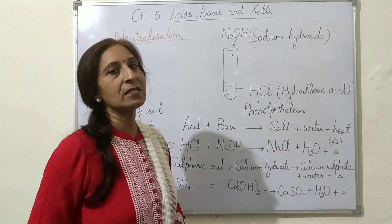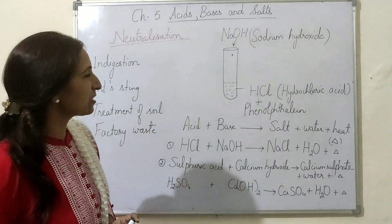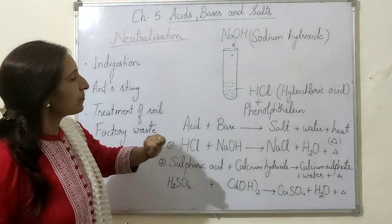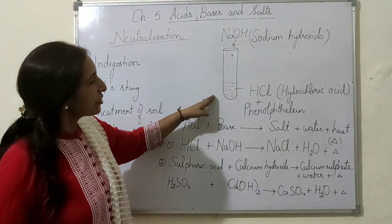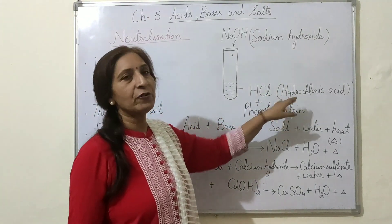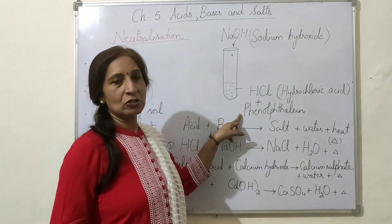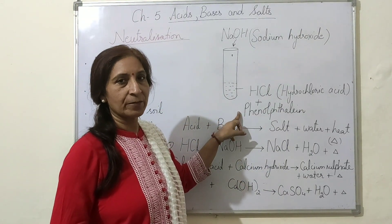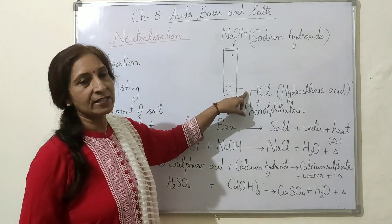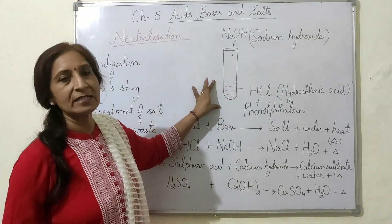This information is going to help us understand the neutralization reaction. I am explaining an experiment with the help of this figure. Here in a test tube we have taken an acid — this is HCl, that is hydrochloric acid — and added a little amount of phenolphthalein as an indicator. This indicator remains colorless in acidic solution, so we have a mixture of acid and phenolphthalein and it is colorless.